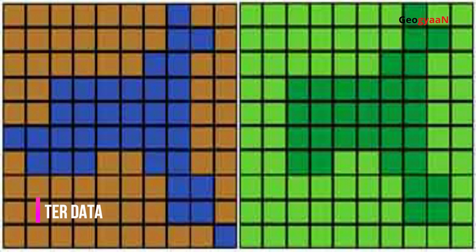Raster data is made up of pixels or grid cells. Commonly they are square and regularly spaced, but rasters can be rectangular as well. Rasters associate values to each pixel. Continuous rasters have values that gradually change, such as elevation or temperature. But discrete rasters set each pixel to a specific class — for example, land cover classes represented as a set of values.